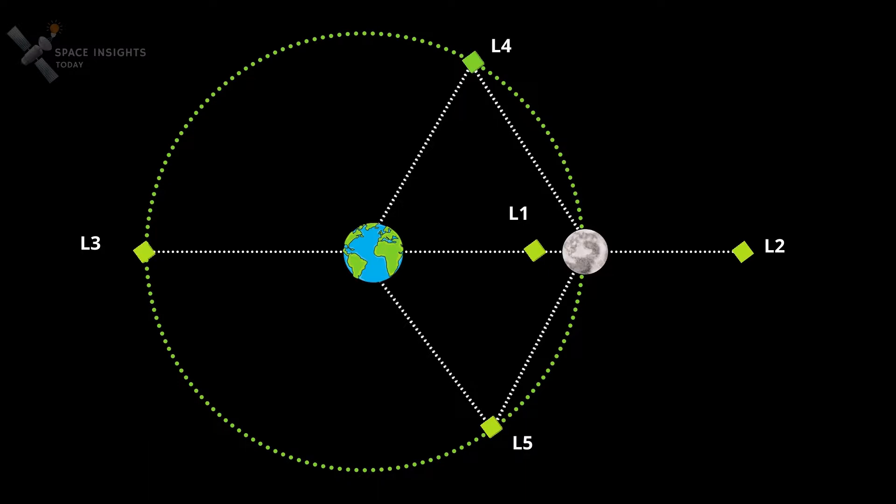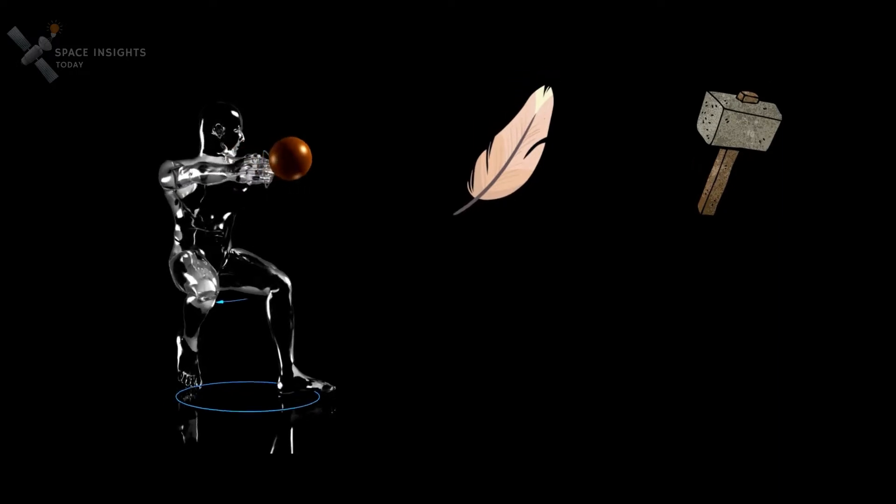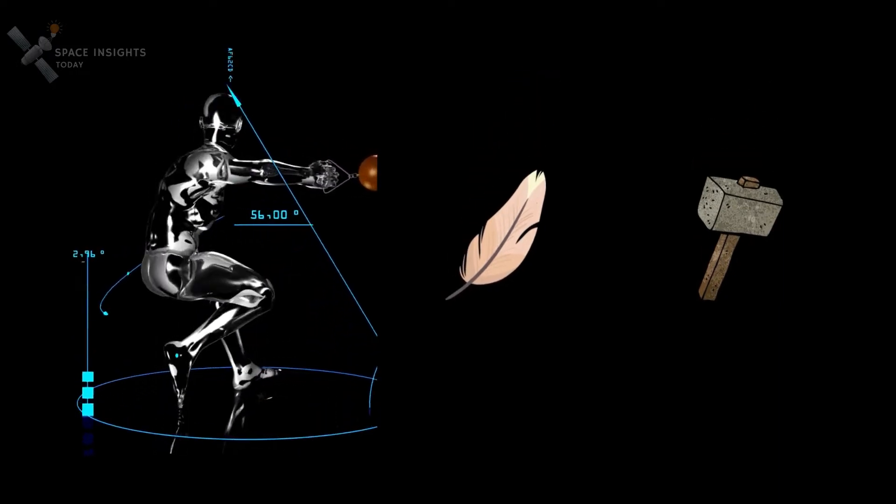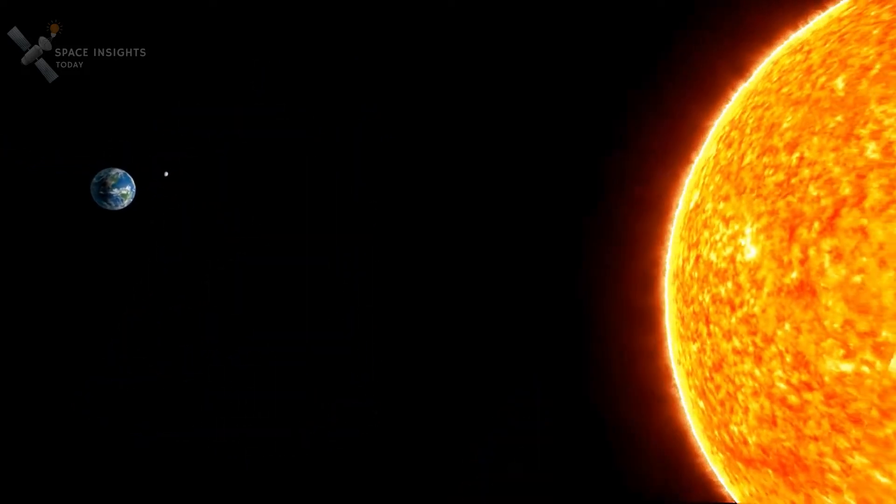Think of them as orbital parking spots. Things put at these locations tend to stay there, thanks to a balancing act between gravity and the centrifugal force. To understand this further, let's take an example of how these points work for satellites placed around Sun and Earth.